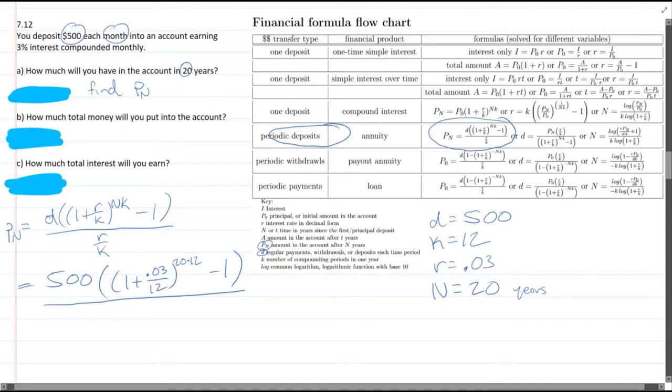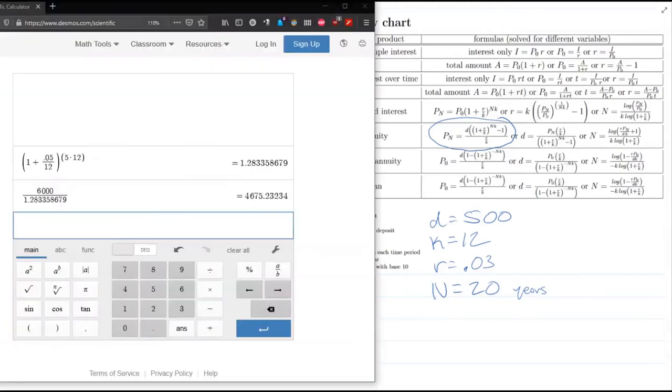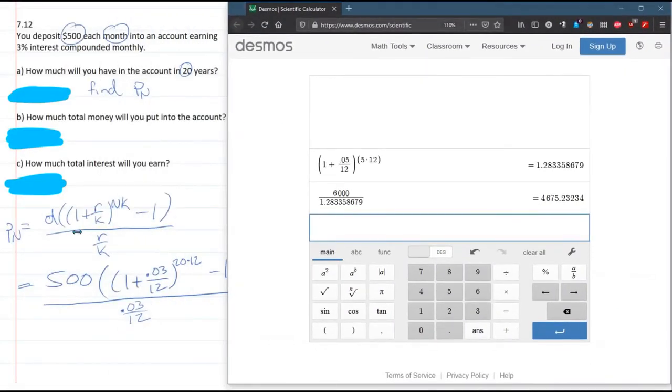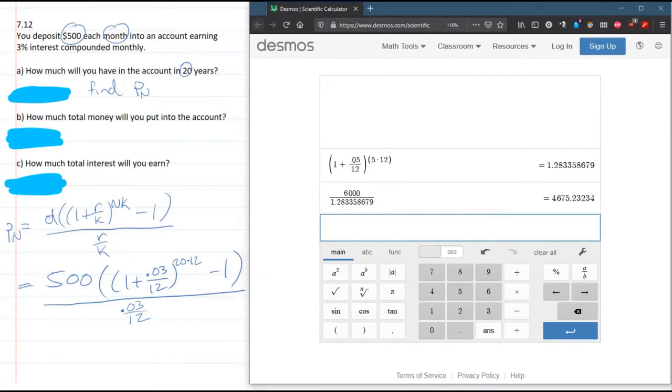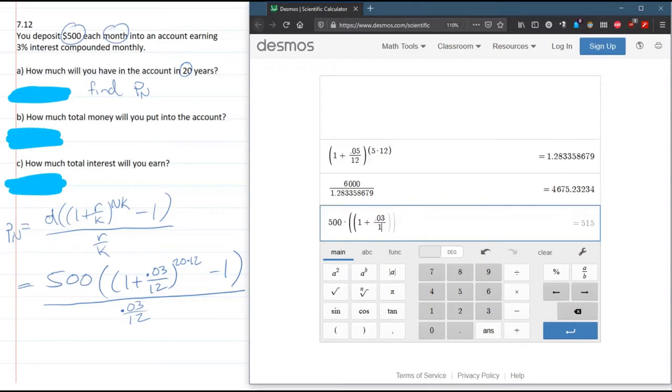And of course, the bottom we have R over K. You could compute this separately and just put the decimal in if you wanted to. That would be okay. All right. So calculator, here we go. So we'll start with the easy part. 500 times. Start two parentheses. 1 plus 0.03 divided by 12. Now I'm using the mouse to move the cursor. We'll close that parentheses.